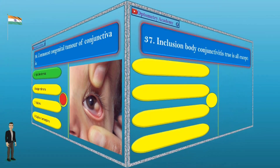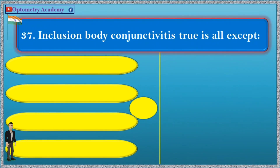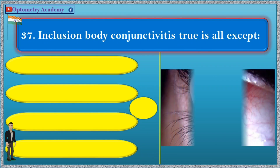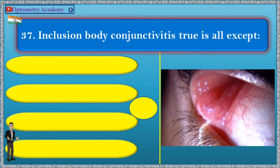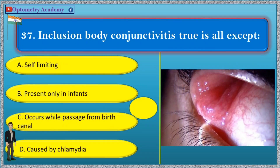Question 37. Inclusion body conjunctivitis — true is all EXCEPT: A. Self-limiting, B. Present only in infants, C. Occurs while passage from birth canal, D. Caused by Chlamydia.